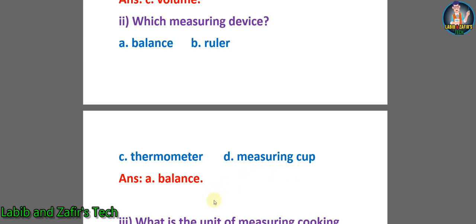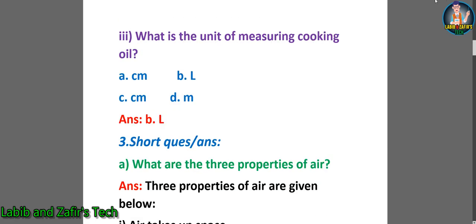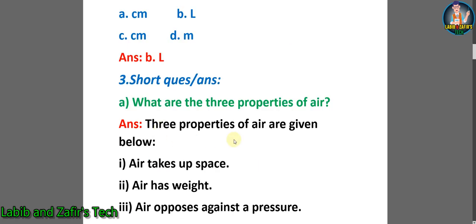Number three: what is the unit for measuring cooking oil — A) centimeter, B) liter, C) centimeter, D) meter? The correct answer is B, liter. Now dear students, let's go through some short question answers.